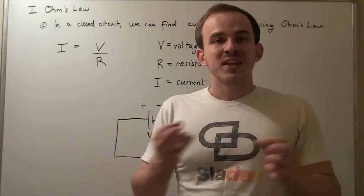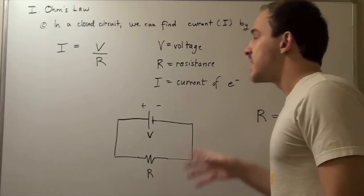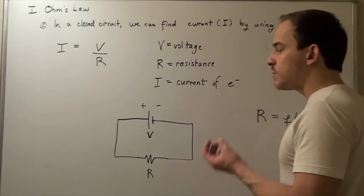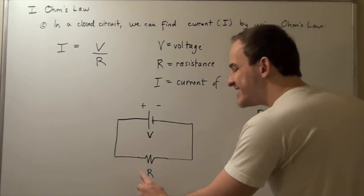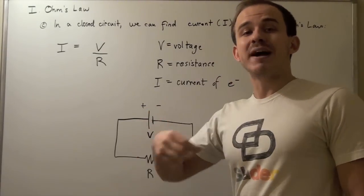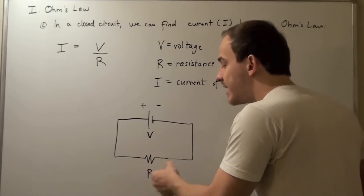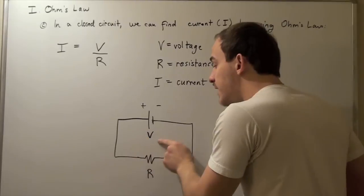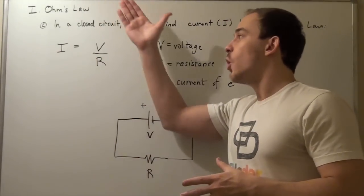Let's look at the following representation of a closed circuit. Voltage is represented by two bars — a long bar, which is positive, and a small bar, which is negative. The squiggly line is our resistance. Electrons will flow from the negative terminal to the positive terminal, while by convention current flows from positive to negative. When electrons pass the squiggly line, they slow down — that's exactly what resistance does. The higher our R, the smaller our I. The higher our V, the larger our I. That's exactly what Ohm's Law gives us: a relationship between current, voltage, and resistance.